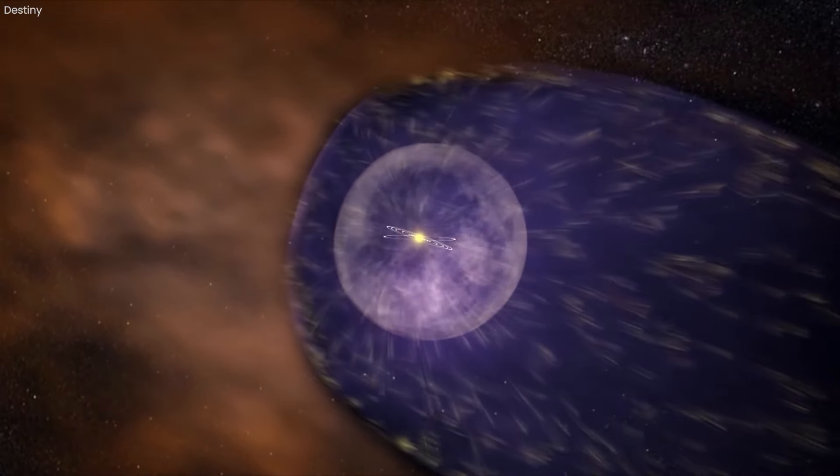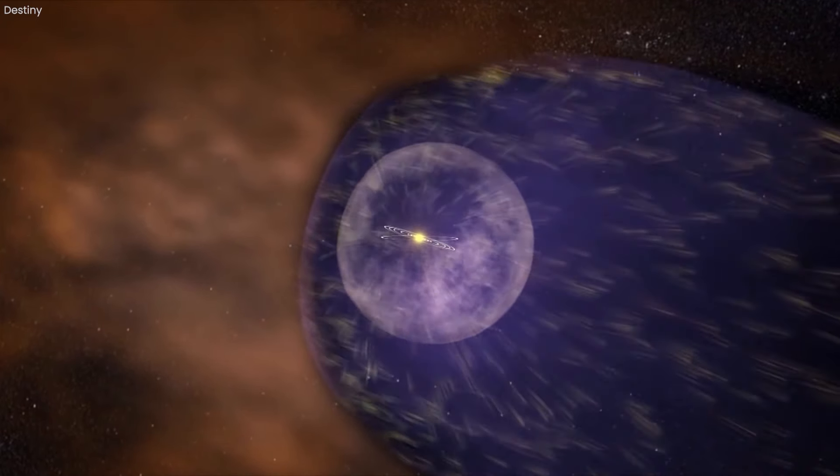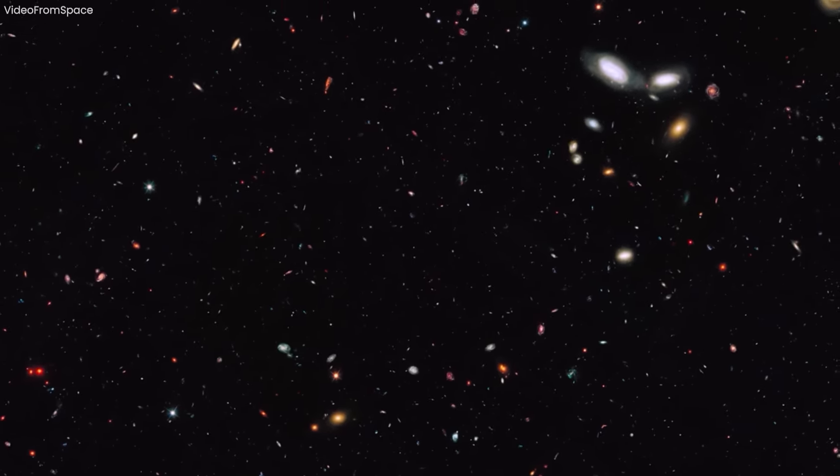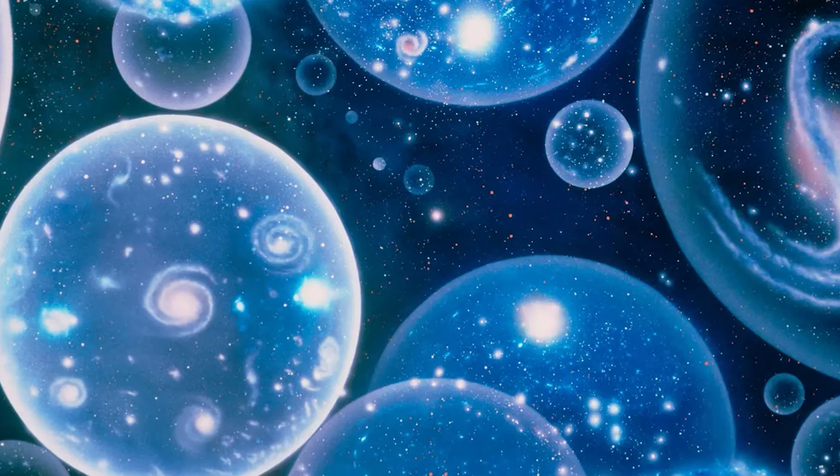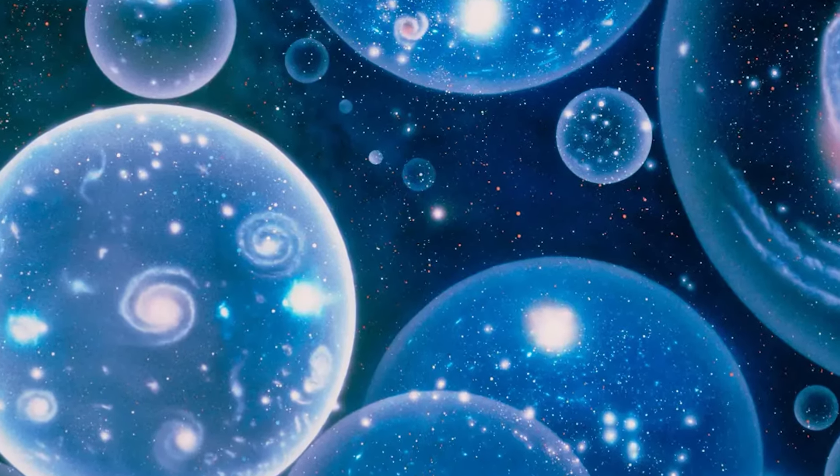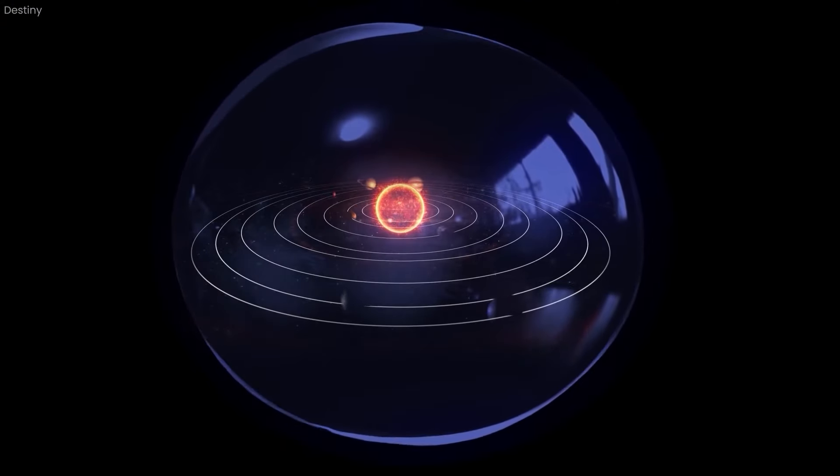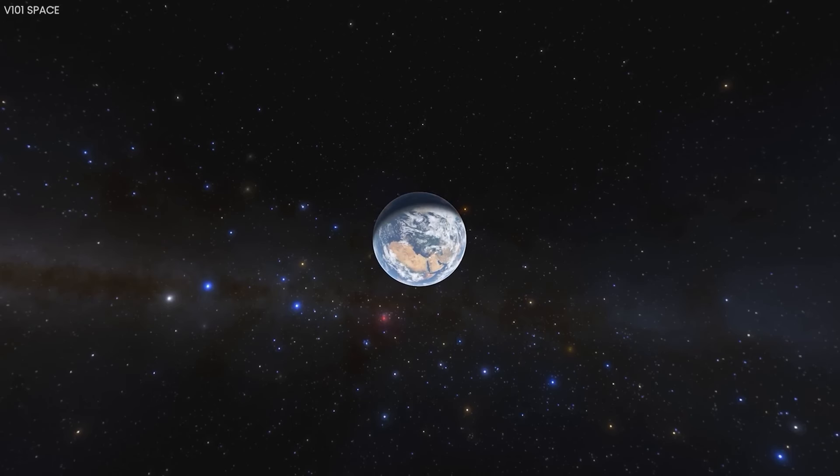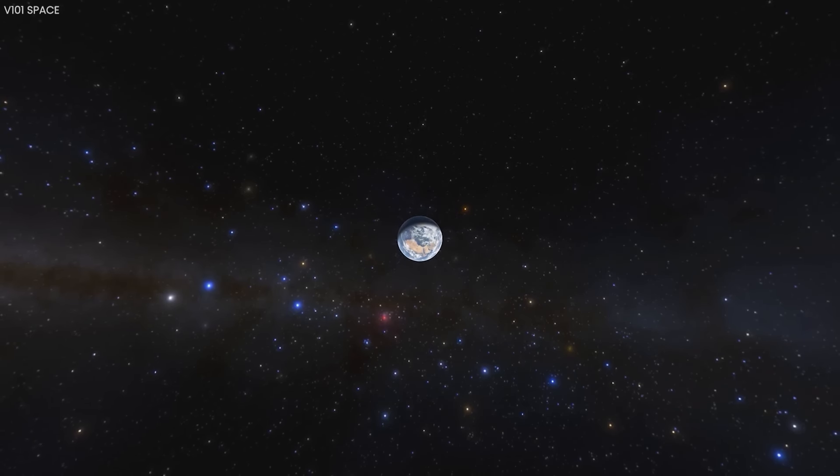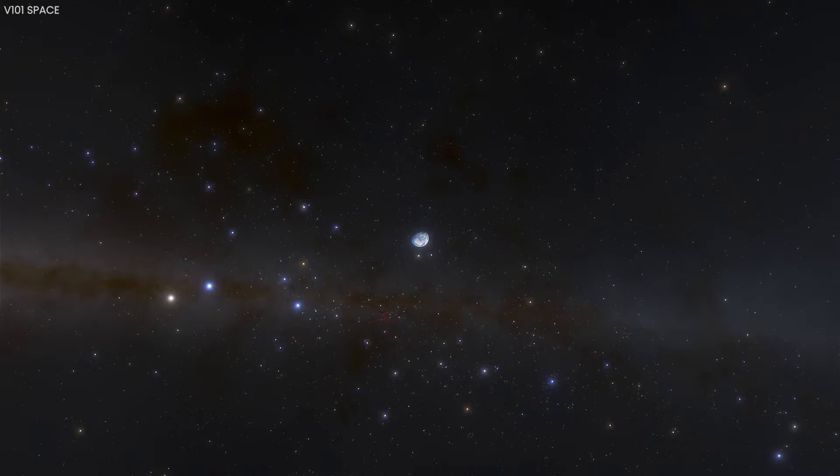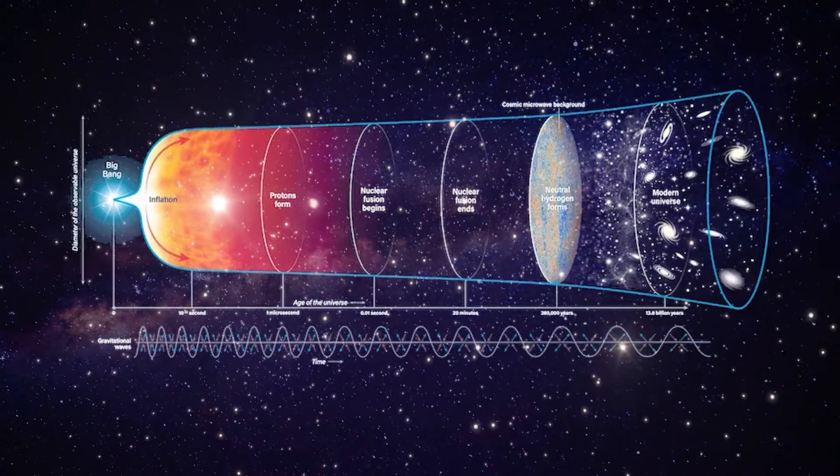This would mean that due to a random quantum fluctuation, a bubble of low inflation was created, aka our universe. There are different conceptions about what the edge of this bubble might look like. Some see it as a bubble of time as well as space, which we can't leave because the edges of the bubble are the beginning of our universe in time.